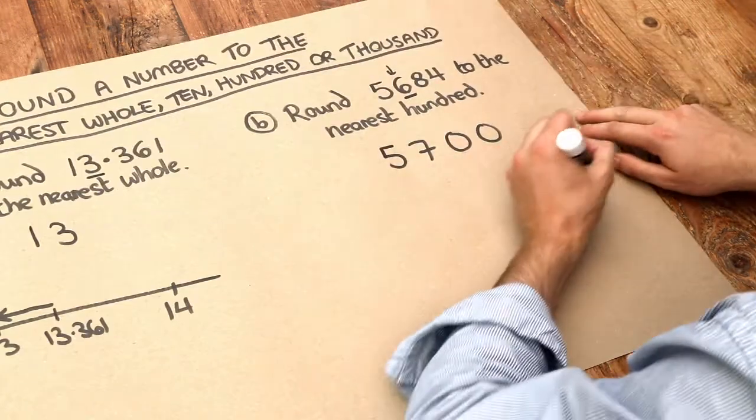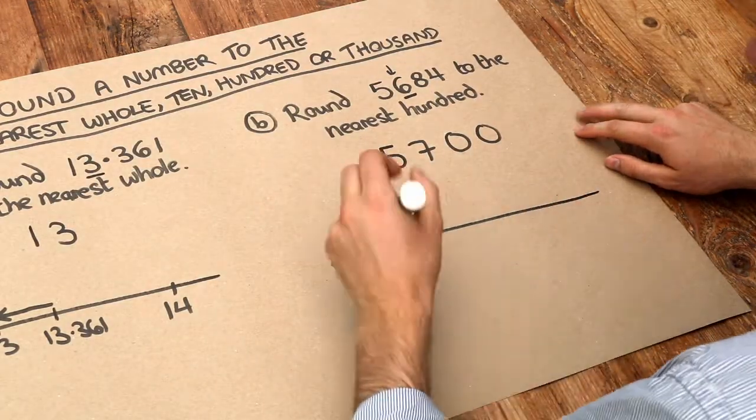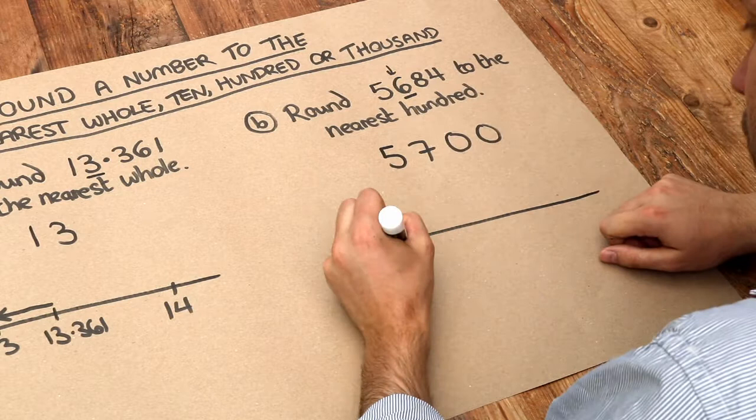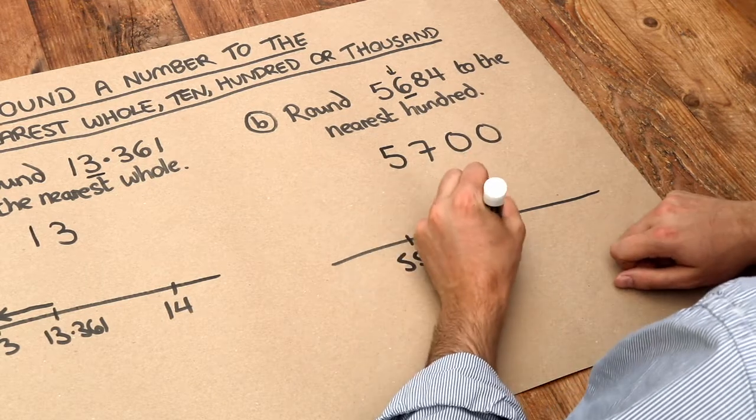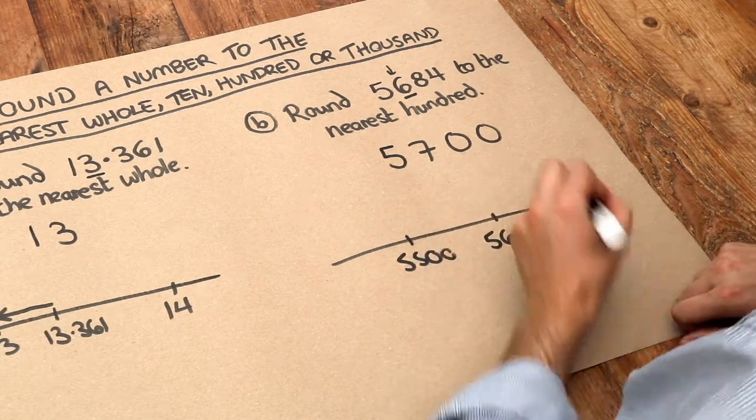And it makes sense when you think about a number line. If we look at the hundreds around this, we've got 5,500, 5,600, these are multiples of 100.